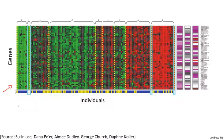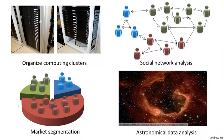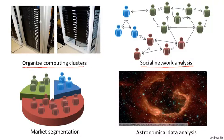Unsupervised learning or clustering is used for a bunch of other applications. It's used to organize large computer clusters — trying to figure out which machines tend to work together, so that if you put those machines together, you can make your data center work more efficiently. Another application is social network analysis: given knowledge about which friends you email the most, or your Facebook friends or Google Plus circles, can we automatically identify cohesive groups of friends, or groups of people that all know each other?